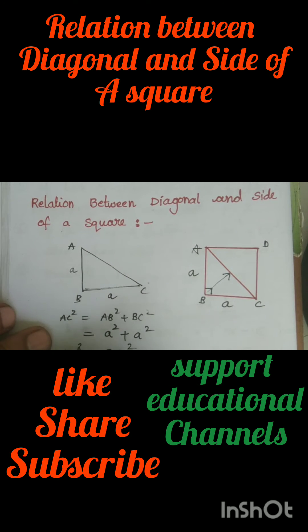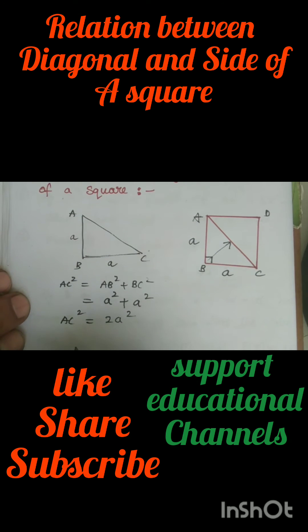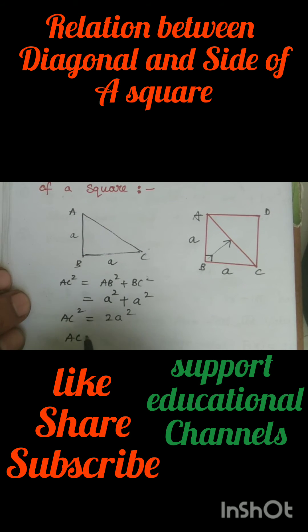So as AC square is equal to 2a square, when you transpose it will become root over 2a square.